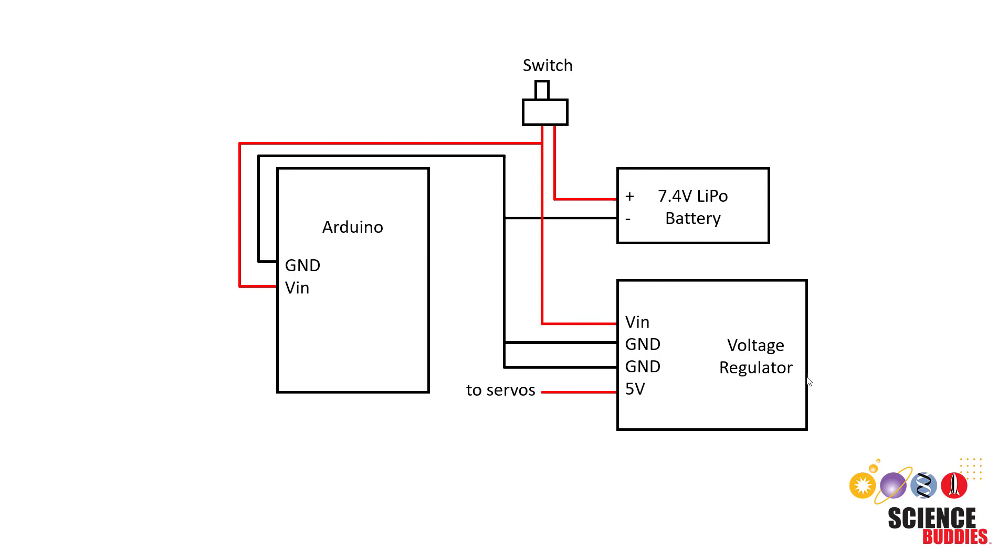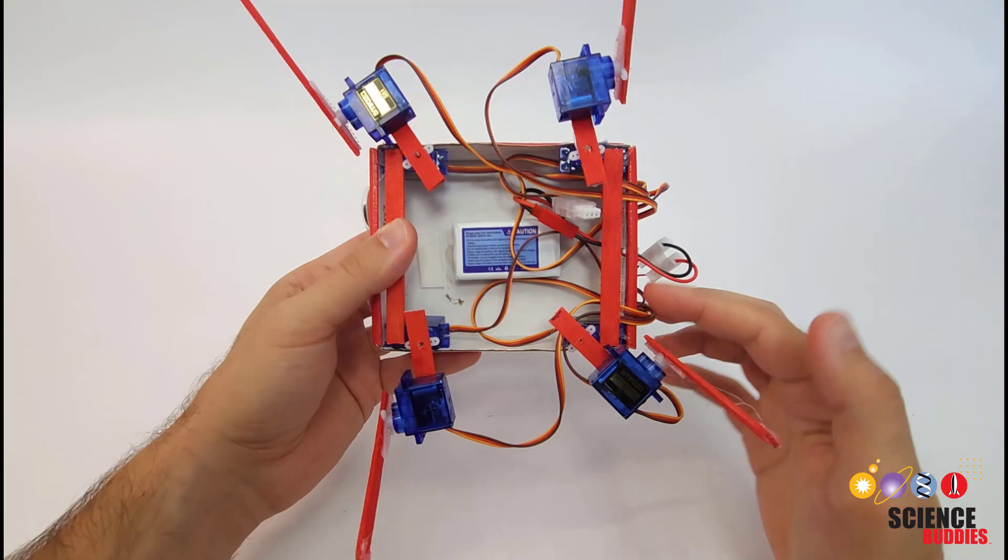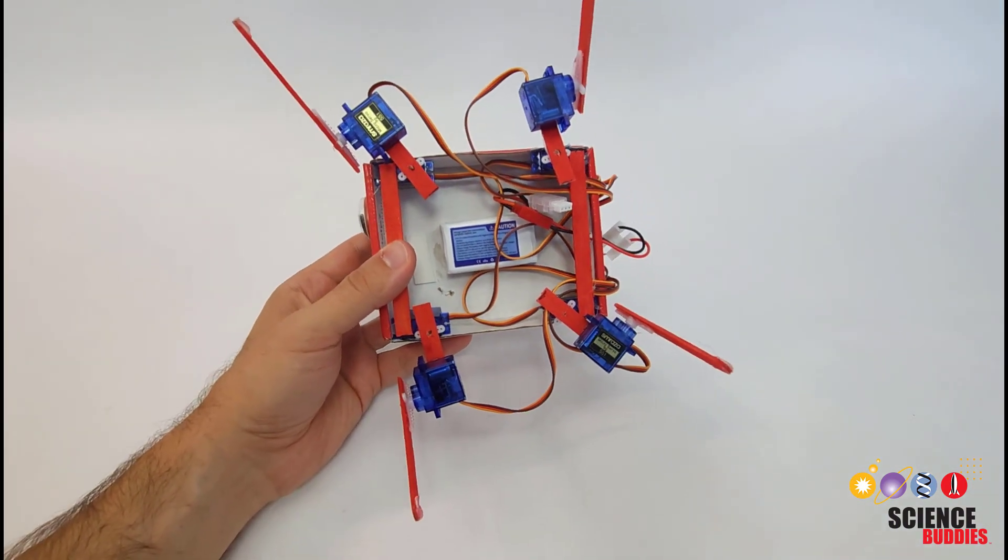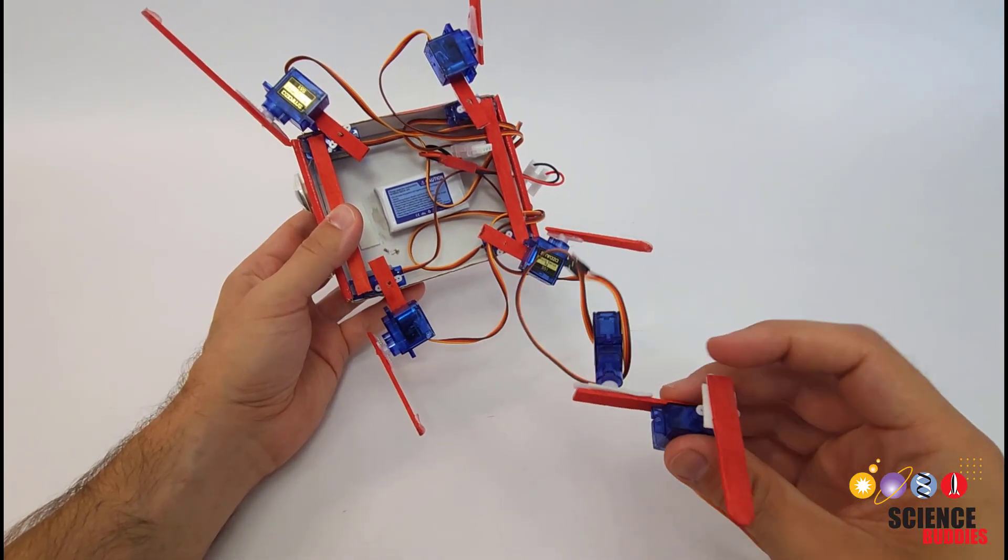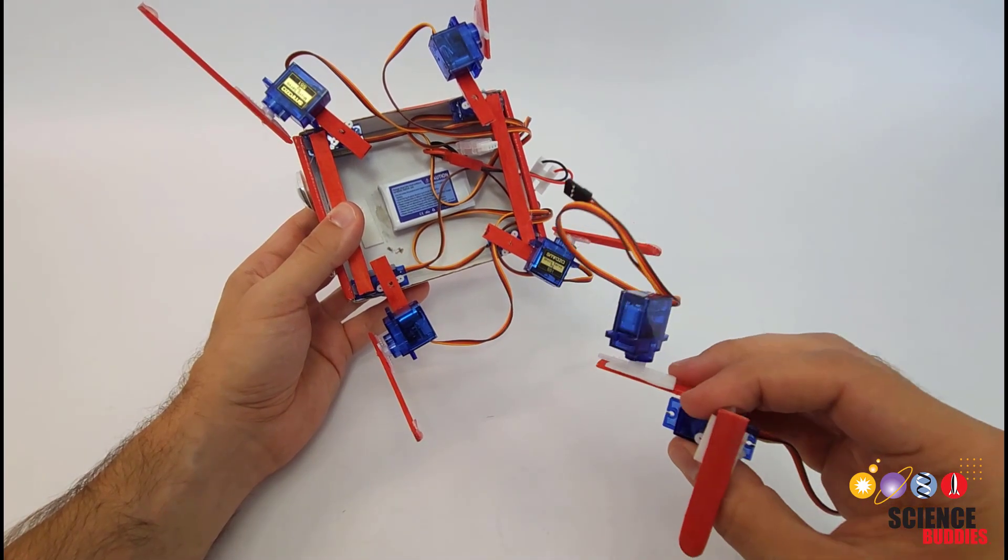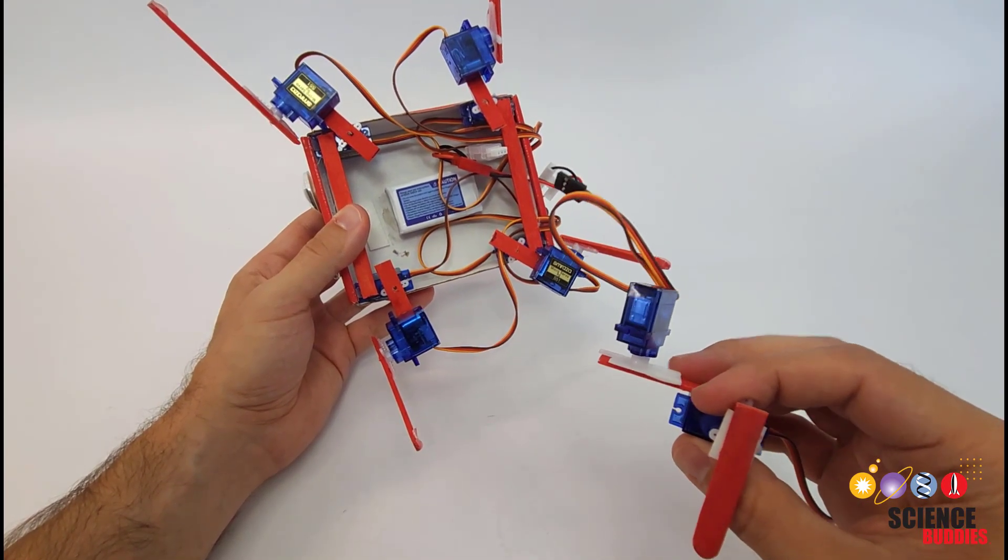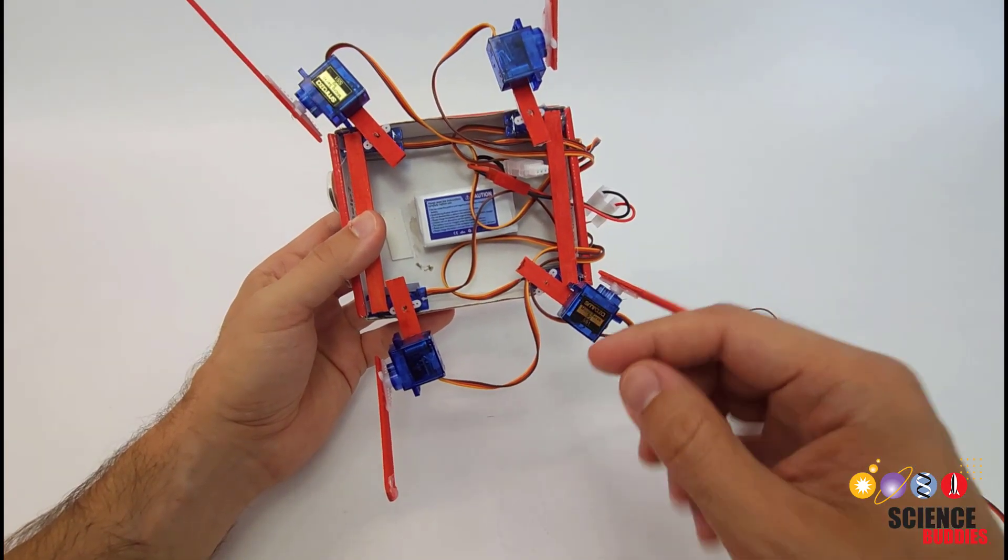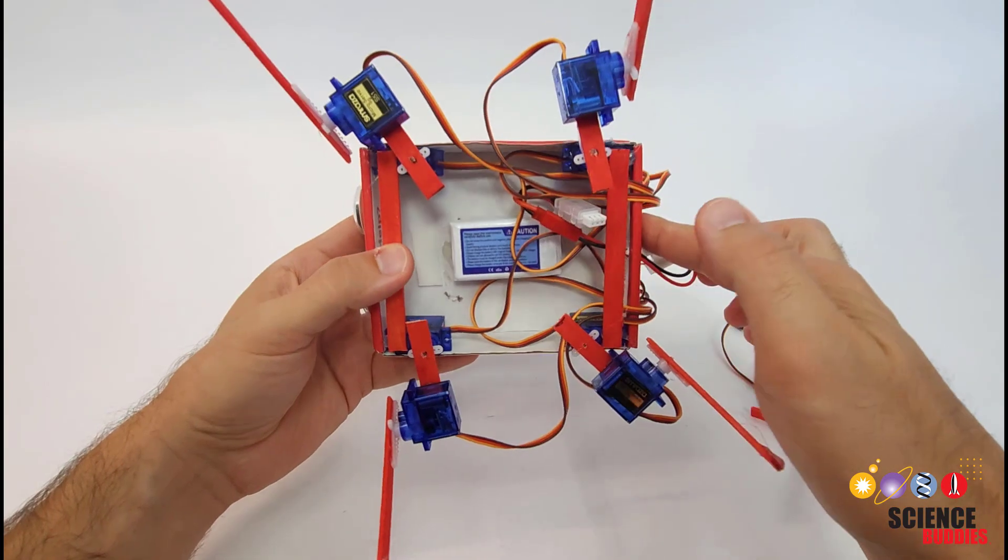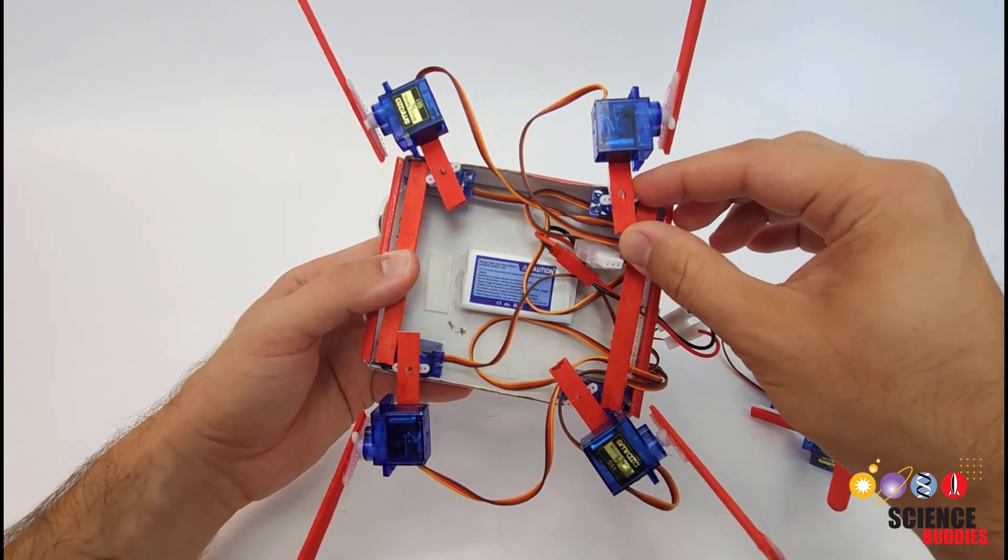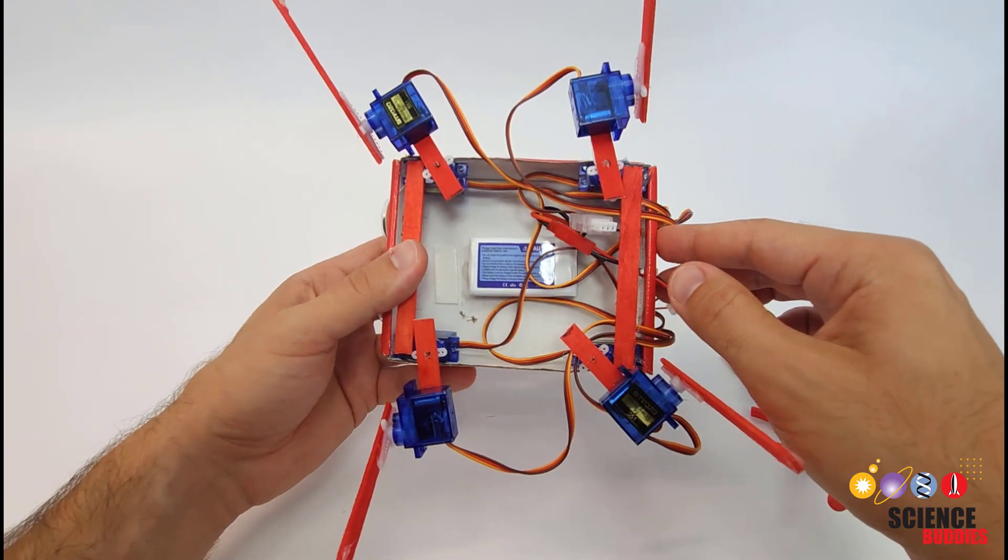You can find a materials list with links for all the parts we used linked in the video description. So this robot is not that hard to physically build. You just need to make four of these legs attaching the popsicle sticks to the servo horns using construction materials like zip ties, tape, or glue, and then mount the four legs to the underside of the cardboard box. Mount all your electronics to the box and then again reinforce things because you want to make sure the robot can support its own weight and the motors are not wiggling around too much.